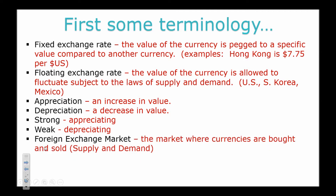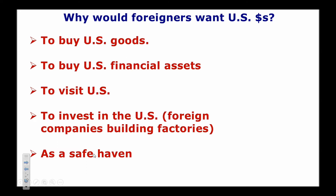We're going to focus on what's called the foreign exchange market — the market where currencies are bought and sold. Why would foreigners want US dollars? If a foreigner wanted to buy US goods, they would first need to buy US dollars, because American manufacturers don't accept euros, pesos, or yen. That leads to an increase in demand for the dollar.